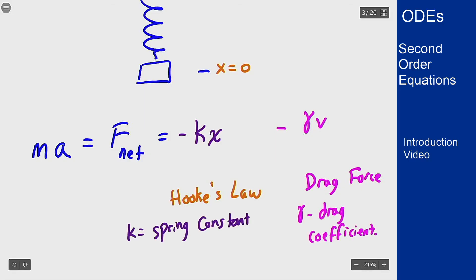But then what do we notice here? Well, a is the second derivative of position, so x double prime. V is the velocity of the change in position, that's x prime.